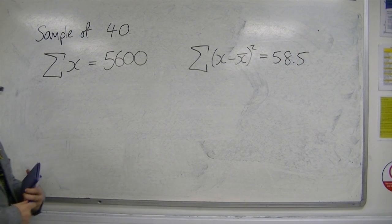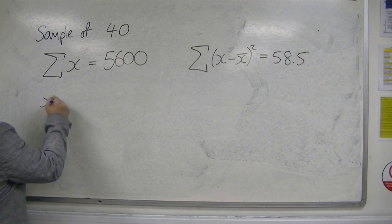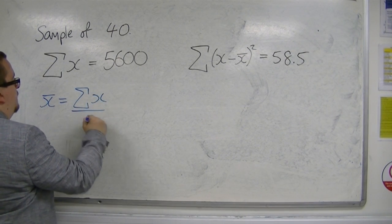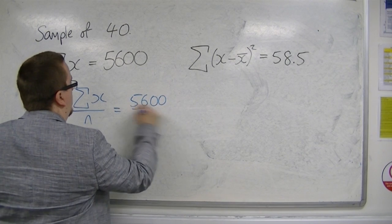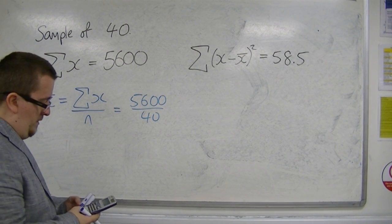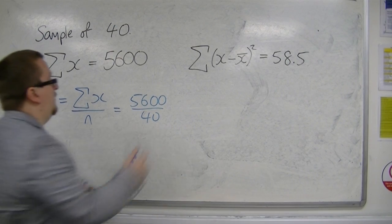In order to find the mean, the mean is the sum of the x's divided by n. So that's nice and easy, that's 5,600 divided by 40. So 5,600 divided by 40 is 140.